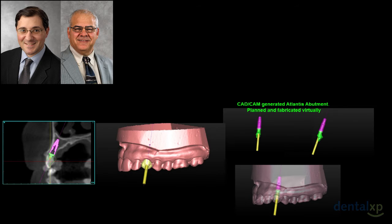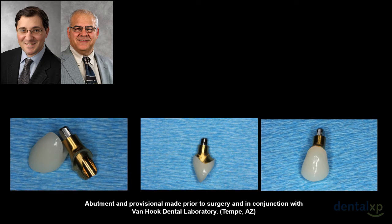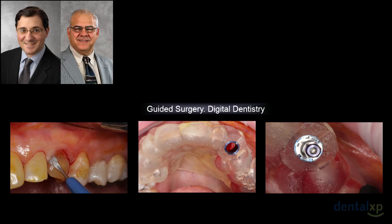Everything is worked up virtually. The model is optically scanned, a virtual tooth is imposed, and you can see the angle correction. The Atlantis abutment and the CAD-CAM provisional are both made on the computer. What's amazing is the surgical guide is being made in Belgium, the abutment in Boston, and the provisional in a lab in Arizona — all coming together at the time of surgery.